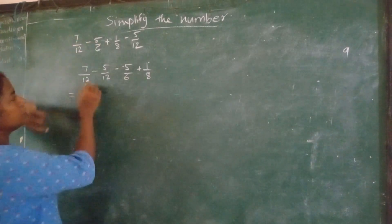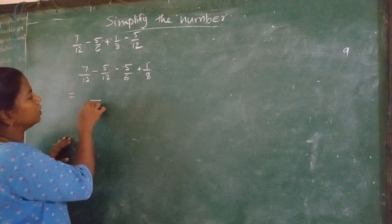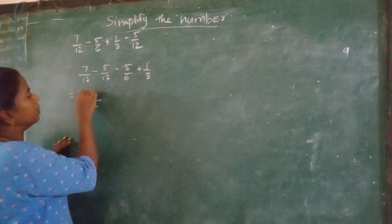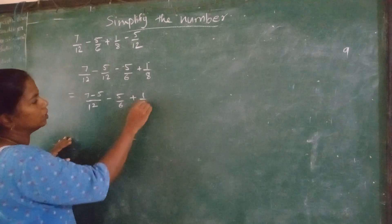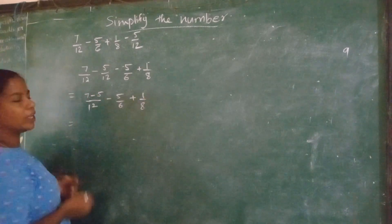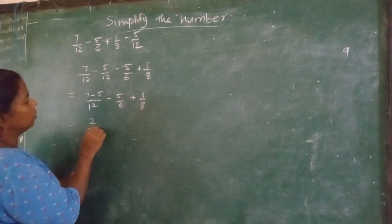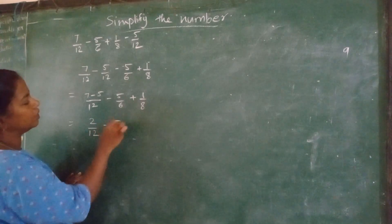This 12, 12 is a common denominator. Then 7 minus 5, minus 5 upon 6 plus 1 upon 8. 7 minus 5 is how much? 2. 2 upon 12 minus 5 upon 6 plus 1 upon 8.